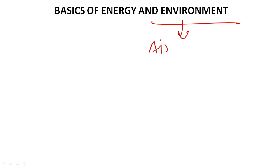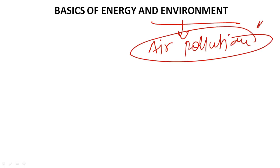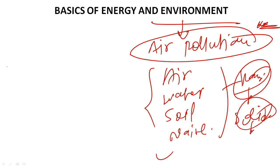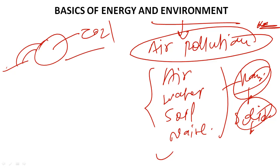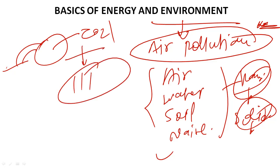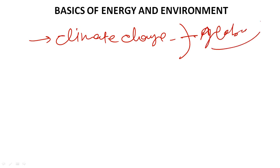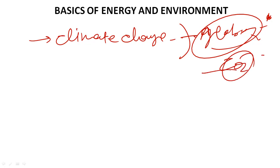Now we discuss the pollution part, which is properly covered in the notes: air pollution, water pollution, soil pollution, noise pollution, and hazardous pollution due to nuclear waste. Solid waste management is also important — solid waste from industries or municipalities, when degraded, releases CO2 or methane, leading to environmental pollution. After air pollution, the next important topic is climate change, caused by global warming gases, especially CO2.